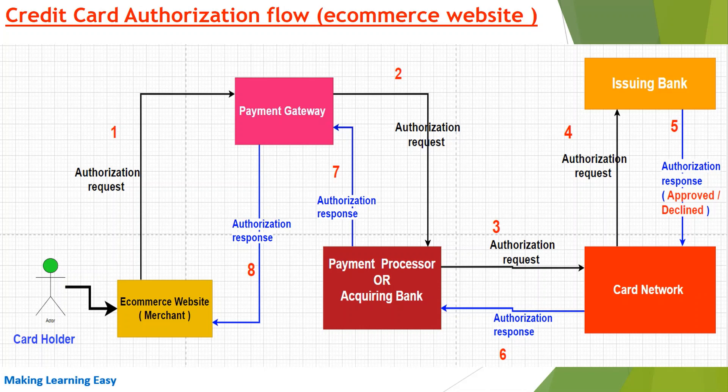For example, a merchant may have chosen a different payment processor for Visa and a different one for American Express. All these configurations are maintained at the payment gateway level, so if a request comes in for a Visa card, it can send the request to the Visa payment processor.